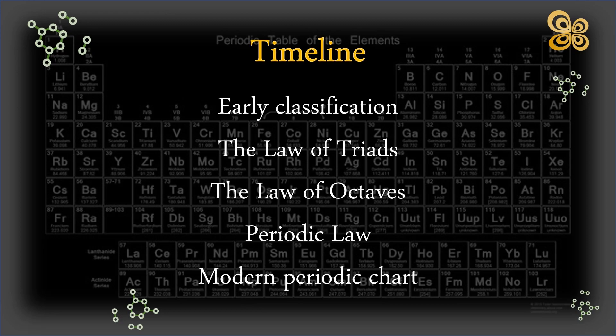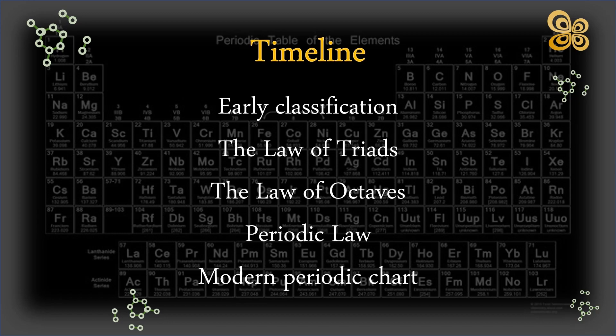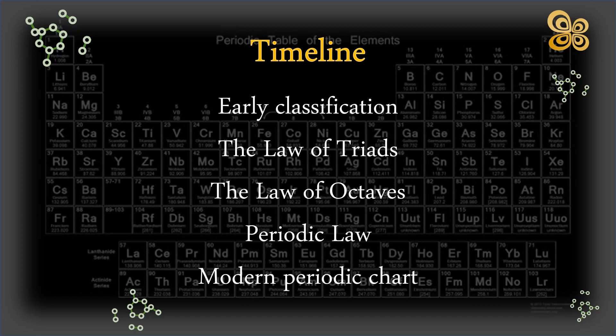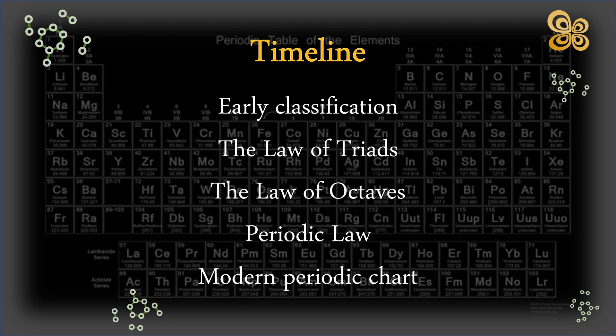Lastly, the modern periodic table. Mendeleev's periodic table, which ordered the elements in ascending atomic weight order and categorized them according to their chemical characteristics, was the first widely accepted version. In 1913, Henry Moseley realized that the properties of elements were better explained by their atomic number, and the present periodic table was formed. The current periodic table arranges the elements in ascending atomic number order and classifies them according to their electron configurations and chemical characteristics. Since then, as new elements are discovered and innovative ideas about atomic structure and chemical bonding are produced, the periodic table has continued to change.